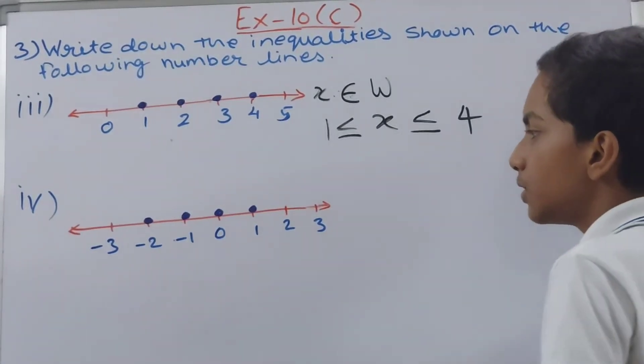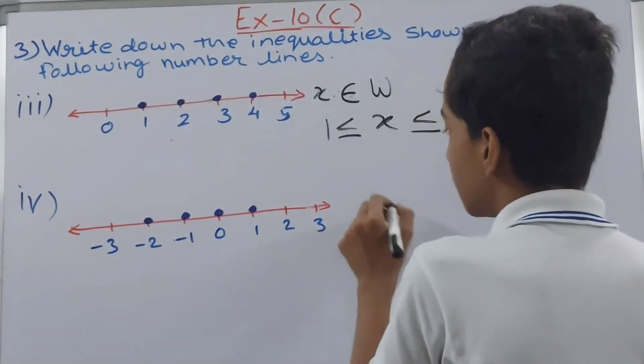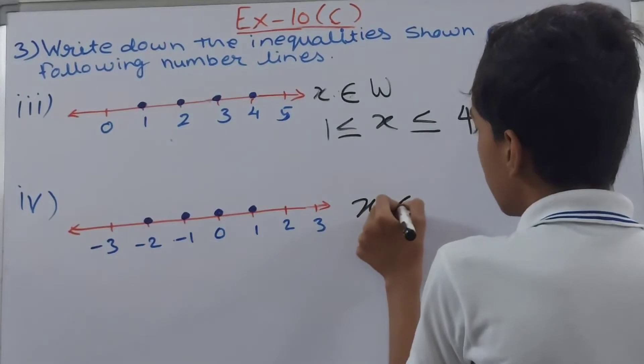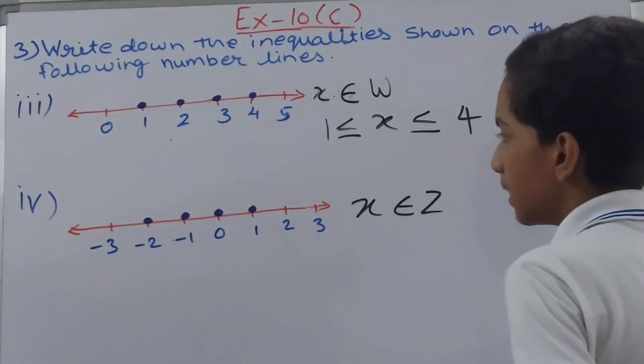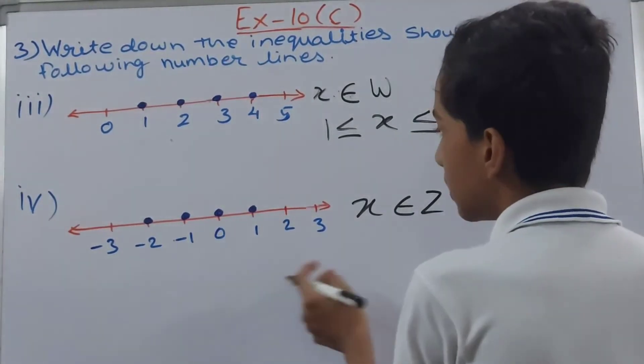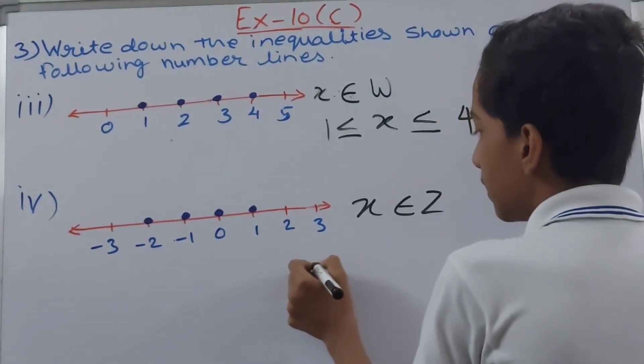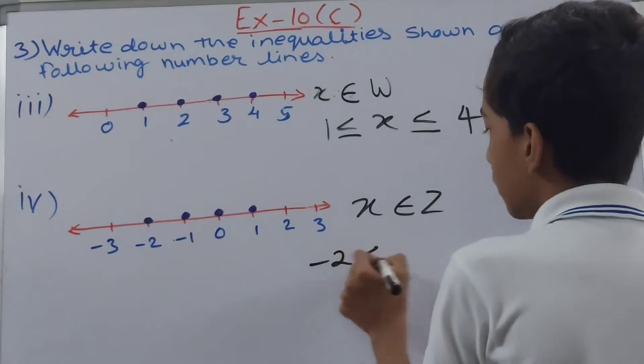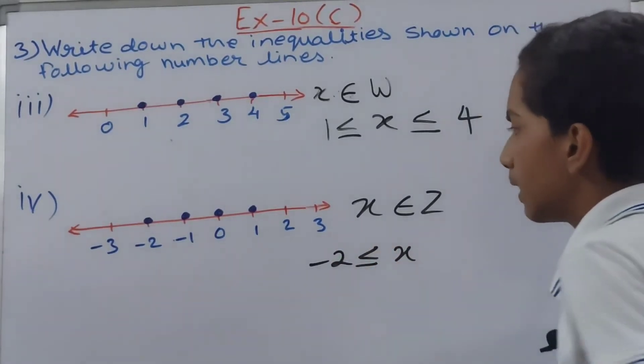Now on to the next one. Here you see it is starting from -2, but before that you have to write x belongs to integer, so Z. Now you see x is starting from -2 here, so this states basically what does this mean is -2 is less than or equal to x. So value of x after -2 is given here, so this is greater than -2.